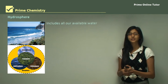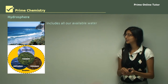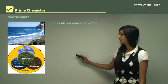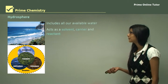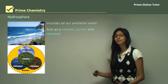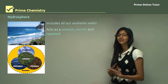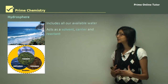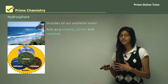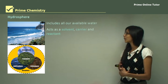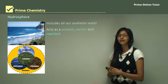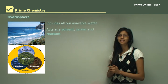Now let's look at the hydrosphere. The hydrosphere includes all our available water. As you can see in the diagrams, the hydrosphere includes everything that has water in the liquid state. All the waters in the hydrosphere act as solvent, carrier, or reactant. For example, when you taste ocean water it is salty because salt is dissolved in the water — here water acts as a solvent and salt is the solute. Similarly, many plants and animals use water as a transport mechanism to send seeds to other parts of land for them to grow.